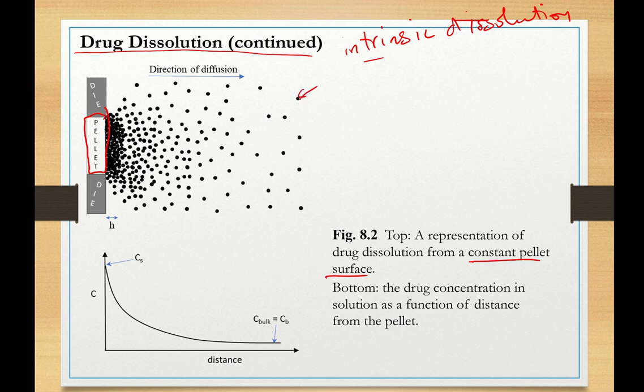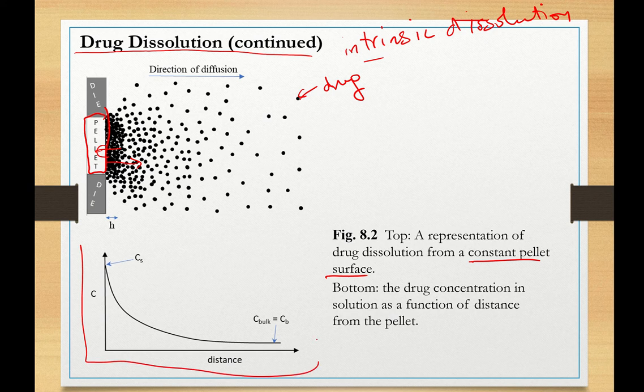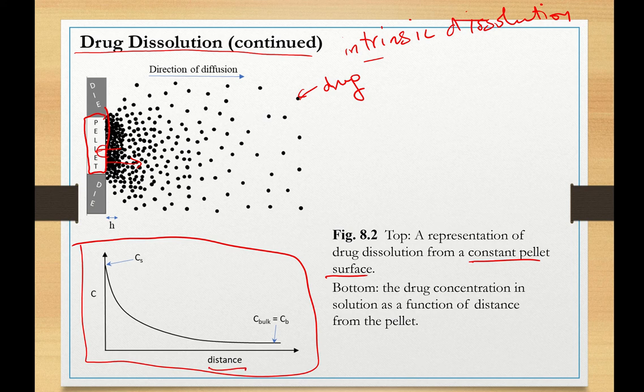The solid circles here are drug, not solvent. Solvent molecules are small and not shown. In this experiment, the solvent collides with the pellet here and they hydrate the drug solutes and drag them into the bulk. Here we have a graph that shows the concentration of drug as a function of distance from the pellet.